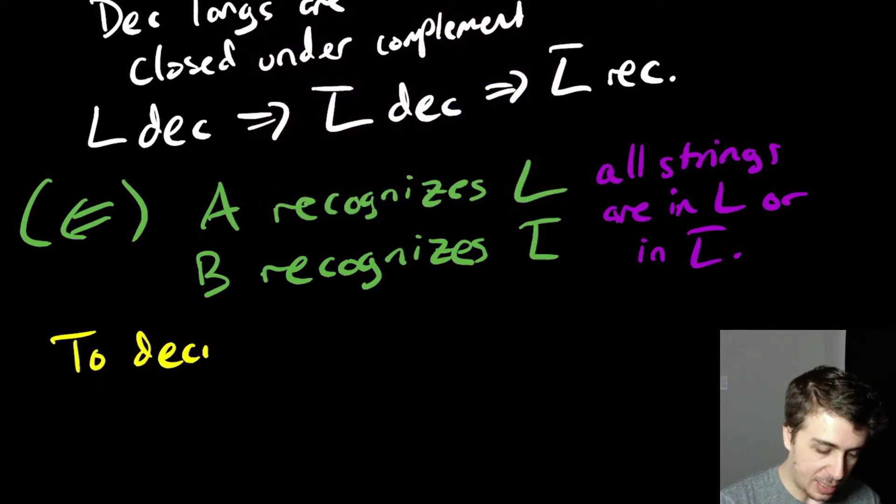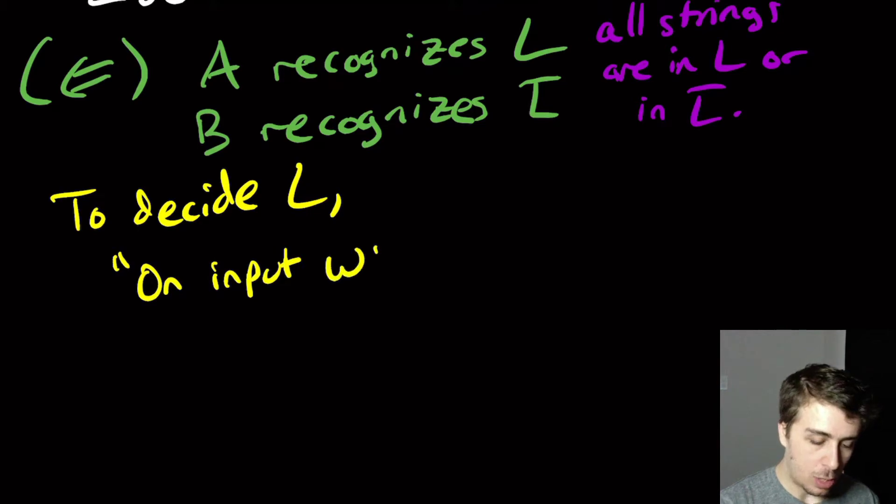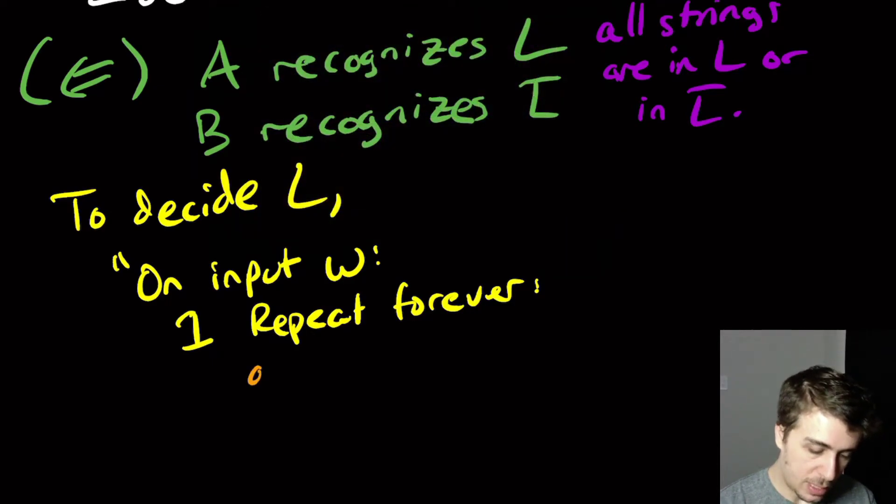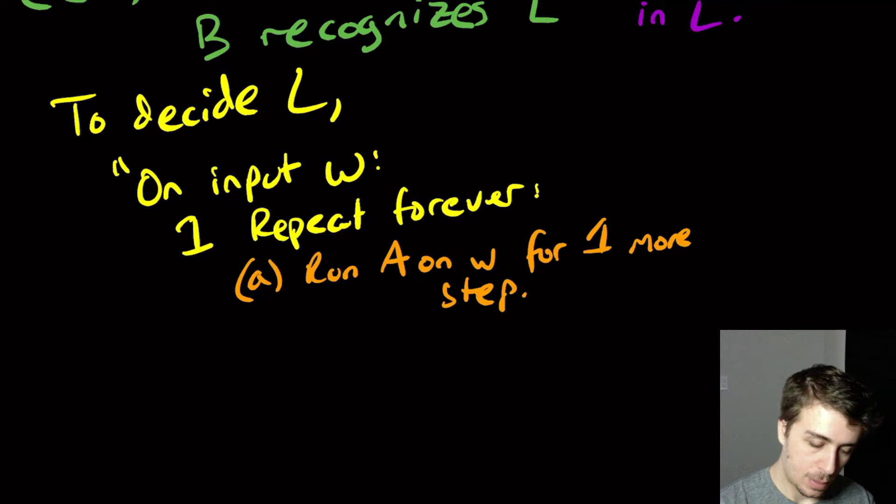So here's how we're going to do this. So to decide the language L, we're going to write this high-level description. So on input W. So the first step is we're going to repeat forever. And that may seem like a red herring, but we're going to add a break statement. We're going to add an accept or reject statement inside to help this. So the first step within that loop is run A on W for one more step. And the second one is to do the same thing for B.